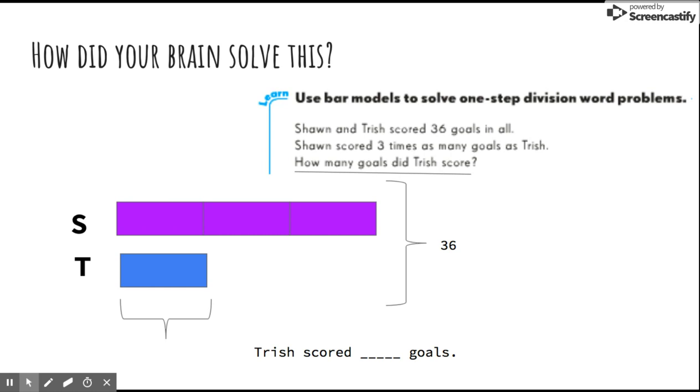I know that all together they scored 36 goals. Next, the all-important bracket with the question mark to ensure I know what I'm looking for. Now that the bar model is complete, I see that four units is 36 goals. So to find one unit, I divide 36 by four. Trish is just one unit, so that means that Trish scored nine goals.